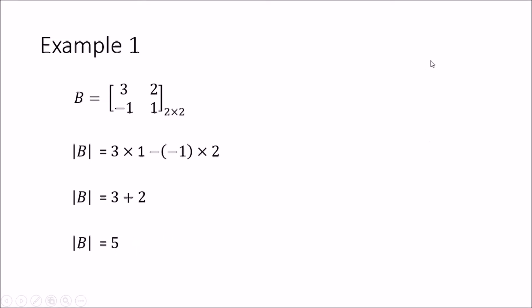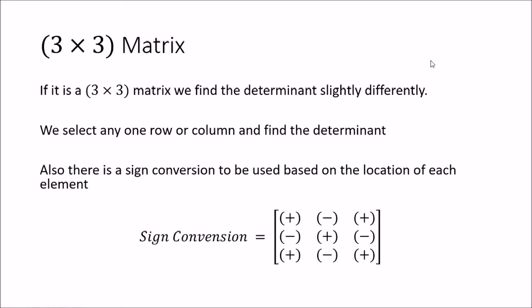Next, we will look at a 3 by 3 matrix and how to find its determinant. When you look at a 3 by 3 matrix, there is a certain sign convention that you have to consider. The sign convention is given as: the first element is plus, the second element is minus, and the third is plus. You have to use this sign convention when finding the determinant of a 3 by 3 matrix.